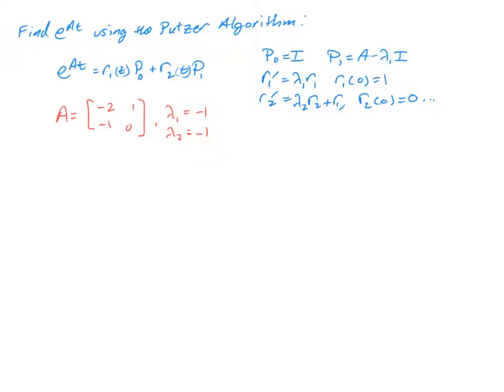Okay, so for this video, we're going to find the matrix exponential using what's called the Putzer algorithm. The idea behind the Putzer algorithm is to use a series expansion for the exponential of the matrix. When the matrix is 2 by 2, there's 2 terms, and when the matrix is 3 by 3, there's 3 terms. So this adjusts with the size of the matrix as we go.